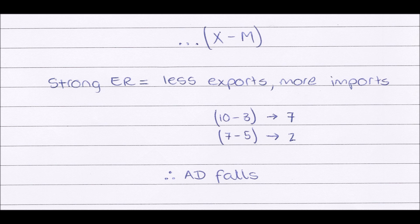First, we need to look at how the exchange rate affects aggregate demand. As discussed in the exchange rates video, if there is a strong exchange rate, then there are less exports but more imports. This means that aggregate demand will decrease because in our bracketed section of our aggregate demand formula we have exports minus imports. So let's say originally our exports were at 10 and our imports were at 3, so the overall number we get from those brackets is 7.